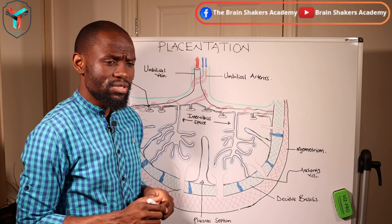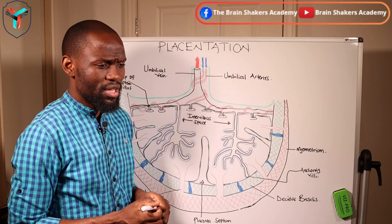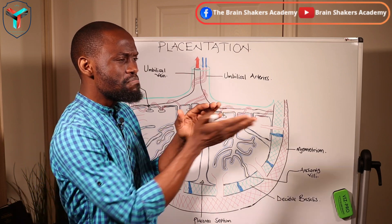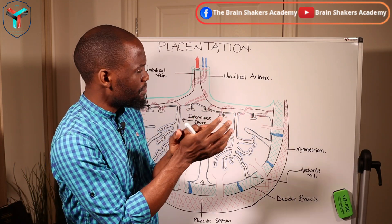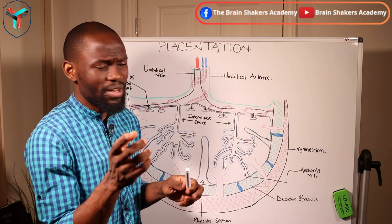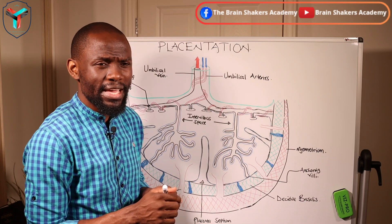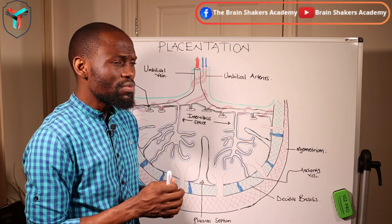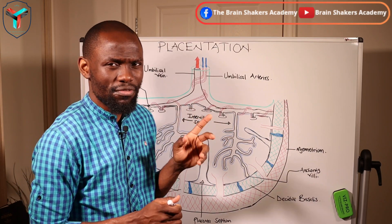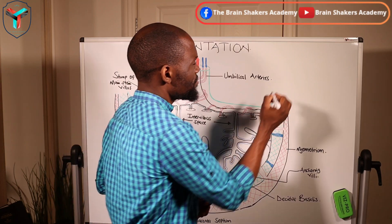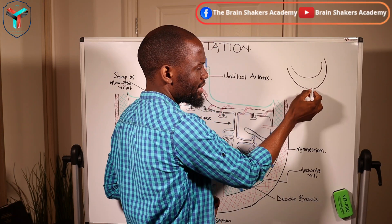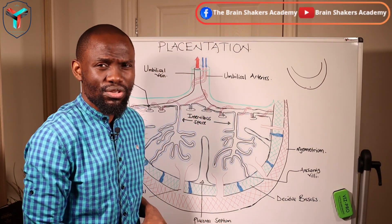Once the blastocyst has come into the uterine lining, it will try to embed itself straight into the endometrium and completely bury itself. Now as it is burying itself, you have the trophoblastic layer. Importantly, with the trophoblastic layer you have two main layers: one is the cytotrophoblast, which is on the inside, and on the outside you have a layer called the syncytial trophoblast.